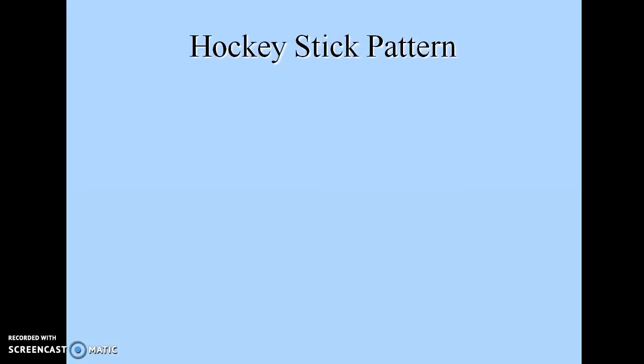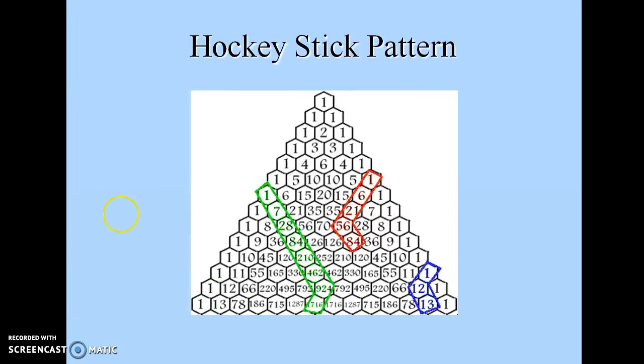The first is the hockey stick pattern. I hope everybody knows about the shape of a hockey stick. That particular shape, you need to depict on Pascal's Triangle. For that: 1, 6, 21, 56 - these are the diagonal elements.